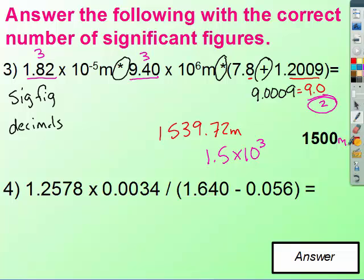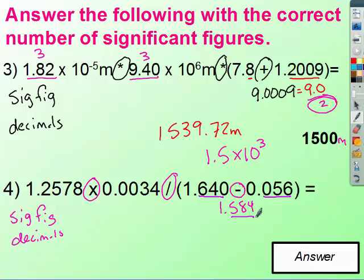I'm going to pause the video and try number 4 on your own. Just like number 3, we have multiplication, division, and subtraction. So we have sig figs and decimals. So we have to break up the problem just like before. So we're going to subtract and we get 1.584. Looking at my decimals I've got 3 decimals and 3 decimals. So this already has 3 decimals so I'm good. I don't need to round that at all.